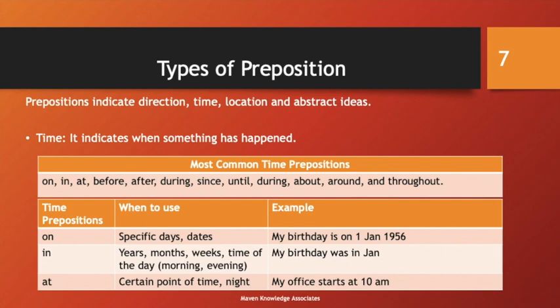When are we going to use 'in'? When we are talking about years, months, weeks, or time of the day like morning or evening. For example, 'My birthday was in January.' So the difference is: we use 'on' for specific days and dates, and 'in' when mentioning just a year, month, week, or time of day. When do we use 'at'? At a certain point of time, and also in the case of night. For example, 'My office starts at 10 AM.'